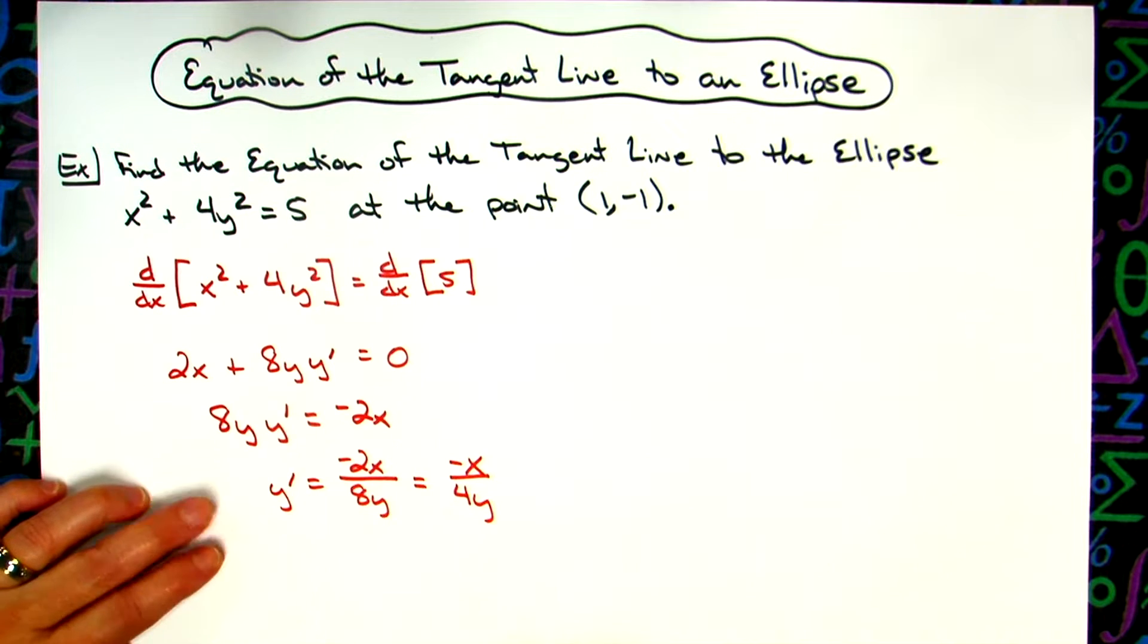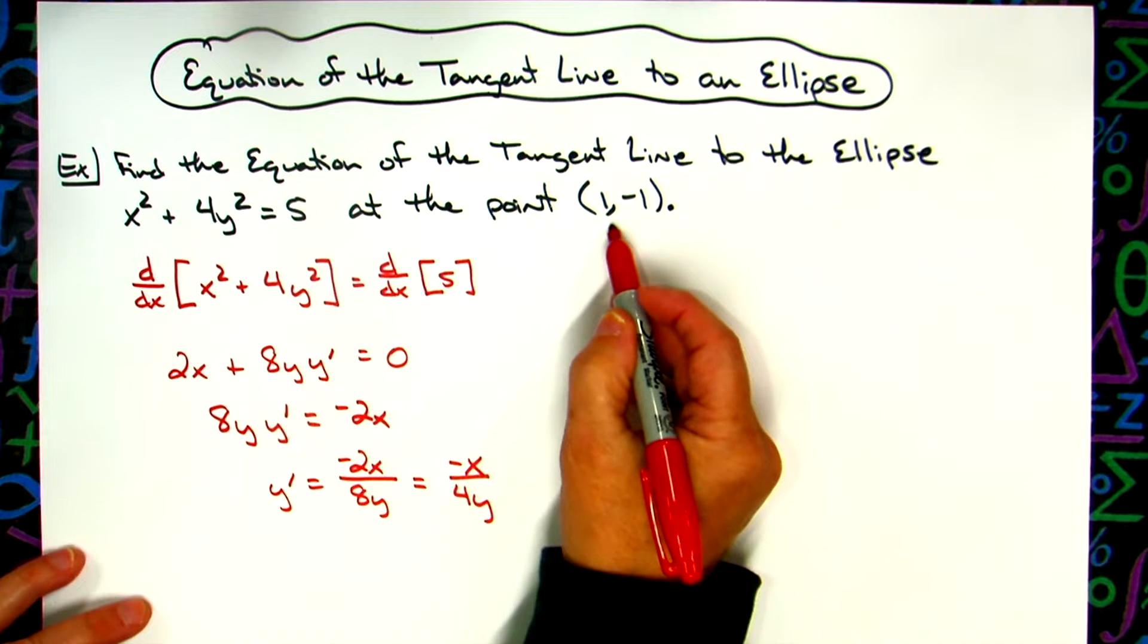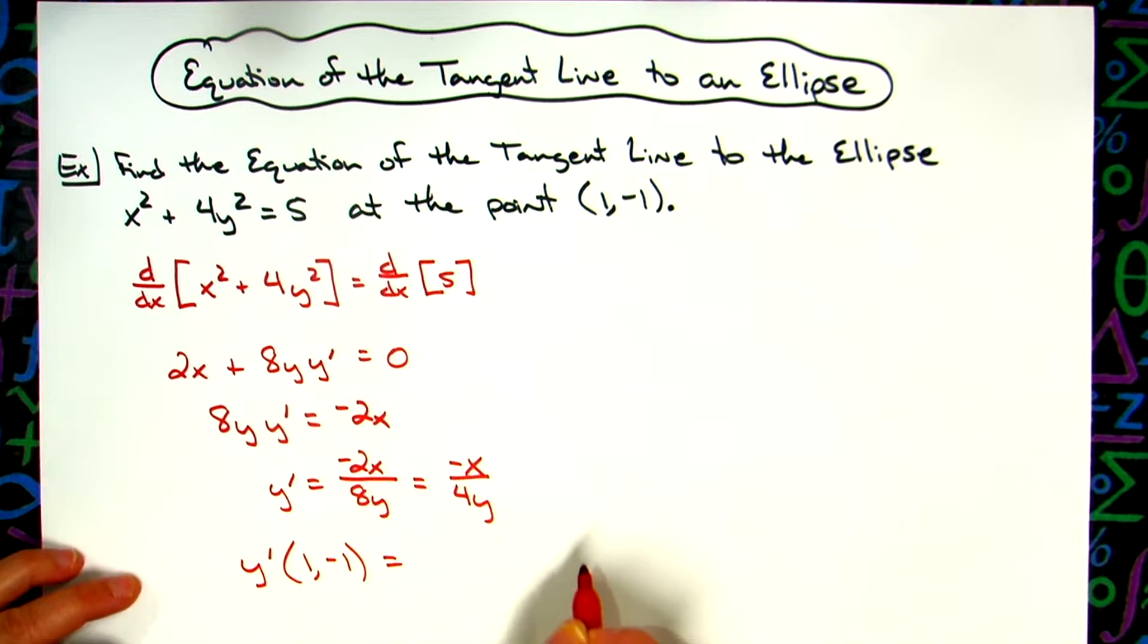Now that is the derivative at any point along the curve. I want the derivative at the point (1, -1). So the derivative at the point (1, -1) means I'm going to plug in 1 for x and -1 for y.